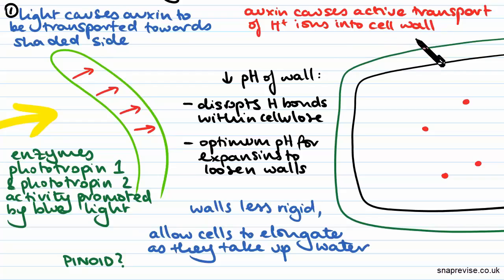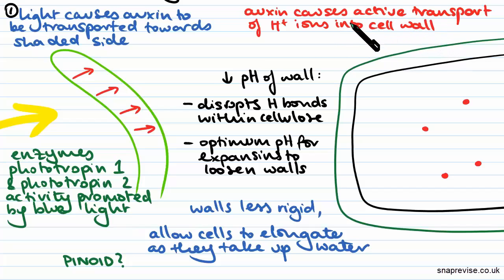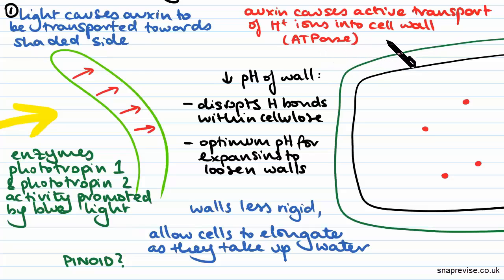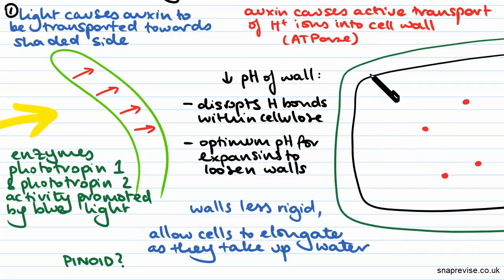auxin causes active transport of hydrogen ions into the cell wall, and this uses an ATPase enzyme. This naturally decreases the pH of the cell wall, and this starts to disrupt the hydrogen bonding within the cellulose of the wall.